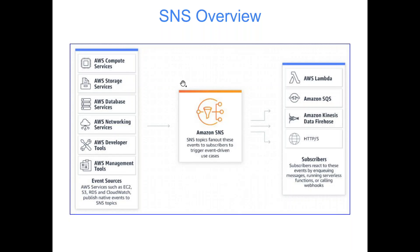Looking at the SNS architecture diagram: it is many-to-many. On the left, many applications can send messages or events to SNS. On the right, there can be many subscribers — Lambda can be one, SQS is another, Amazon Kinesis for data analysis, an HTTPS endpoint, or person-facing channels like SMS, Slack, and email notifications.